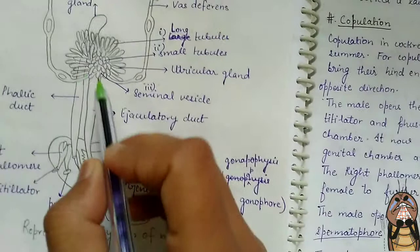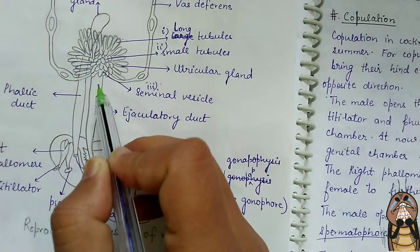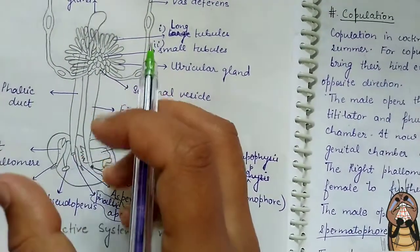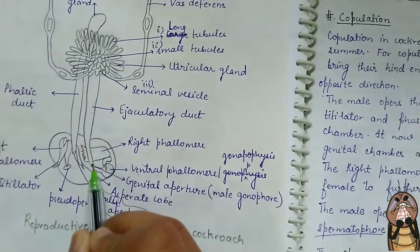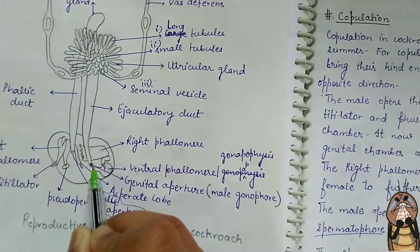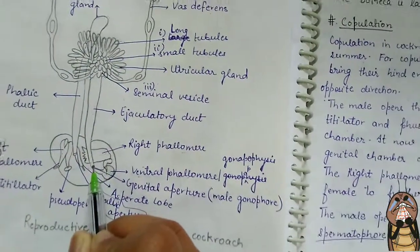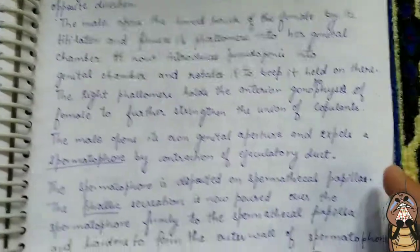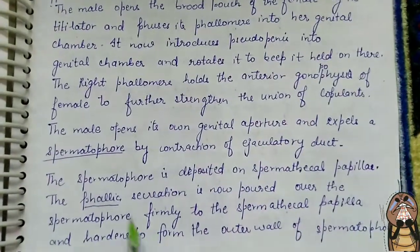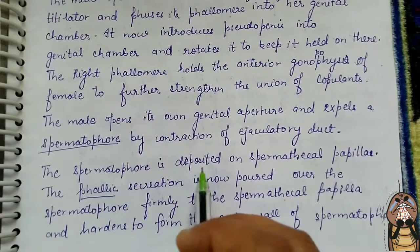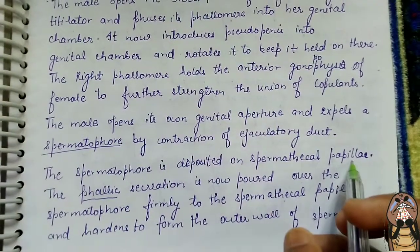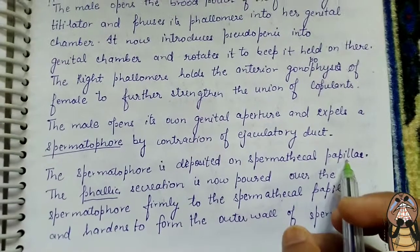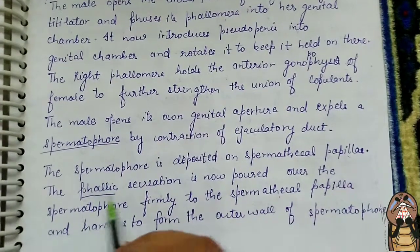The spermatophore is produced in the ejaculatory duct of the male reproductive system. As the ejaculatory duct contracts, the spermatophore is transferred into the female genital aperture. The spermatophore is deposited on the spermatical papillae, which is present in the genital chamber of the female.